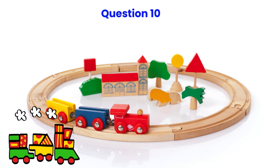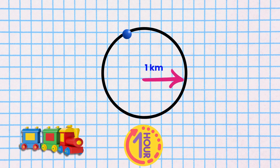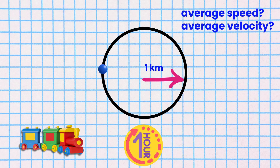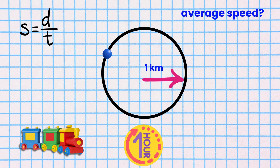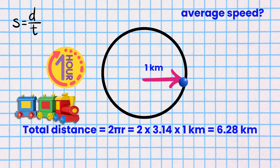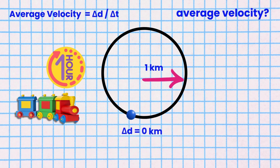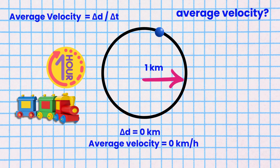Question 10. An amusement park train travels on a circular track of radius 1 kilometer and completes one round in 1 hour. What is the train's average speed and average velocity? Average speed is total distance divided by total time. The total distance equals the circumference of the circle, which equals 2π times 1 kilometer, which equals 6.28 kilometers. Average speed equals 6.28 kilometers divided by 1 hour, which equals 6.28 kilometers per hour. The displacement is 0 kilometers since the starting and finishing positions are the same, so the average velocity equals 0 kilometers per hour.